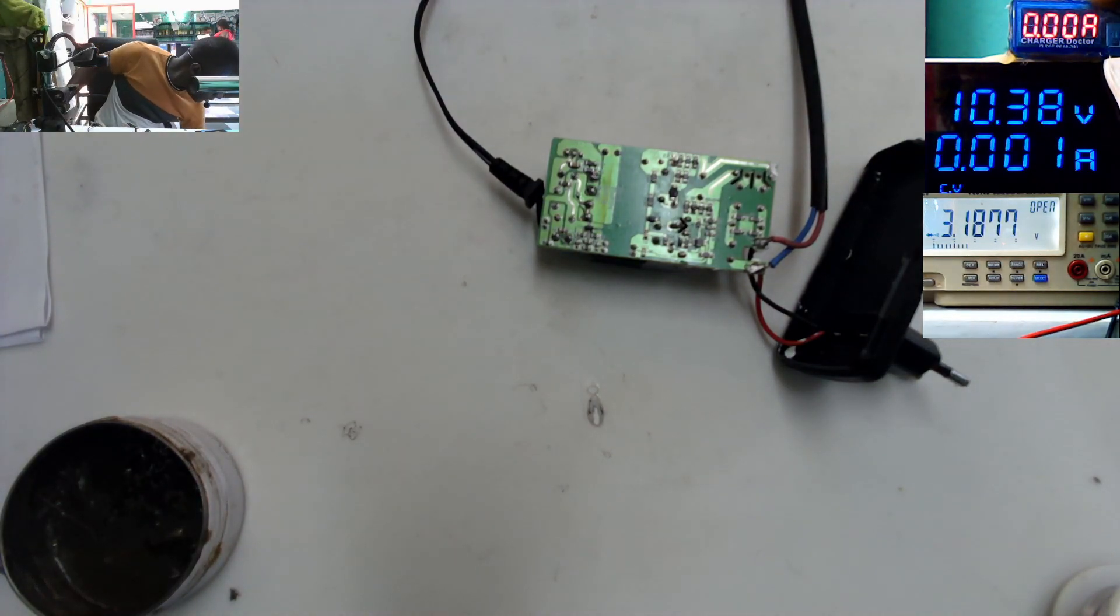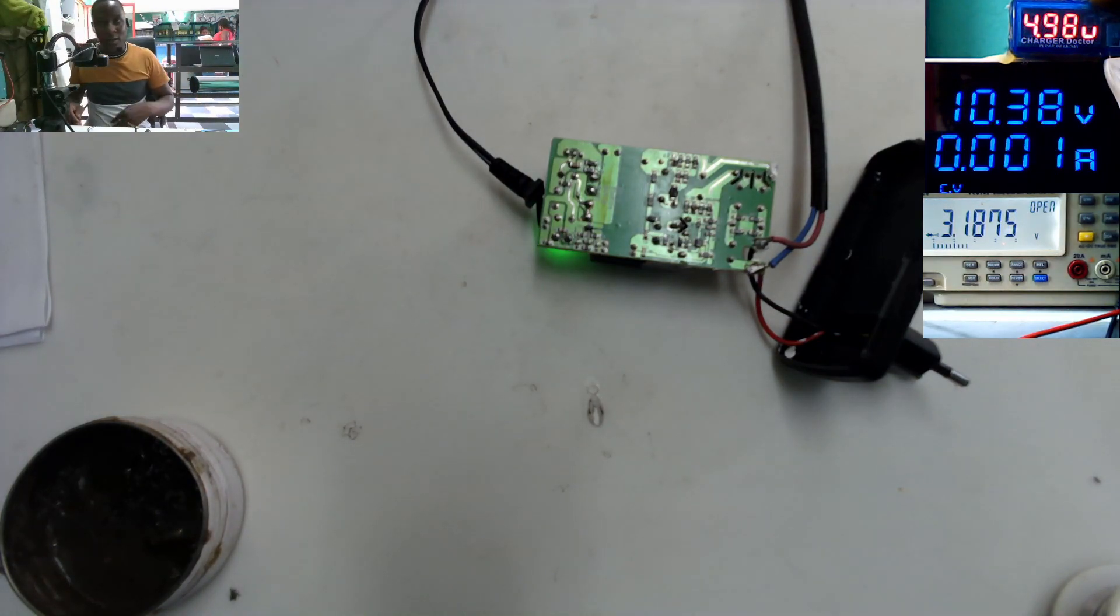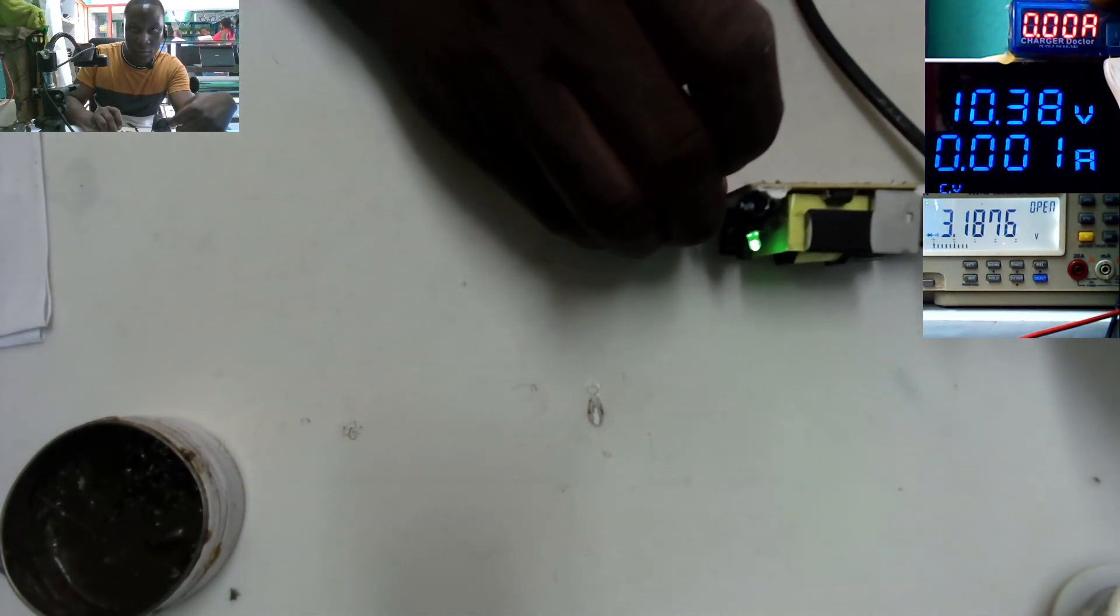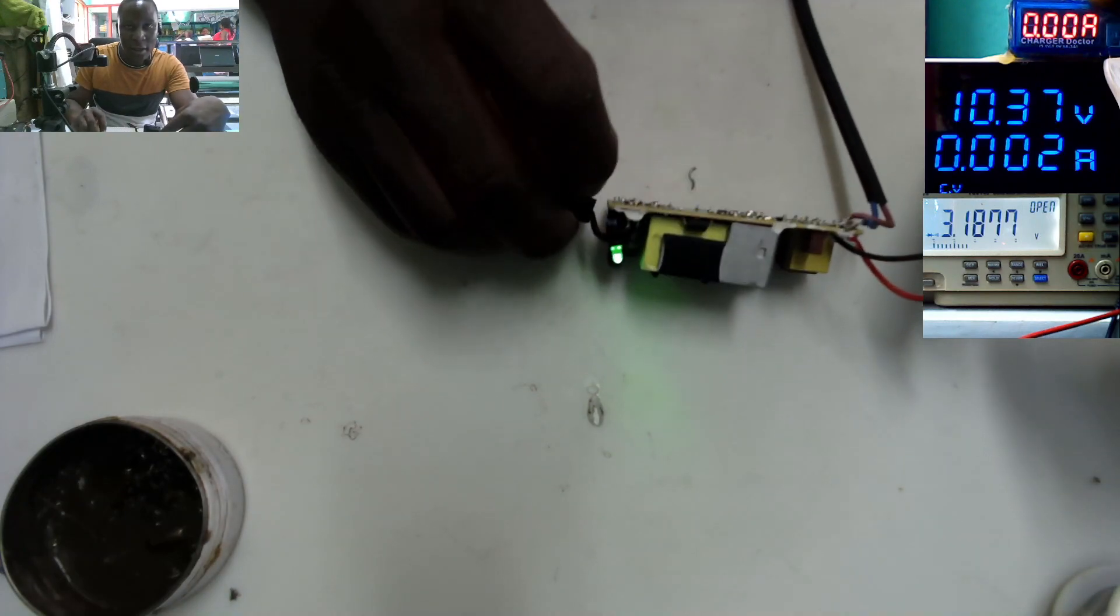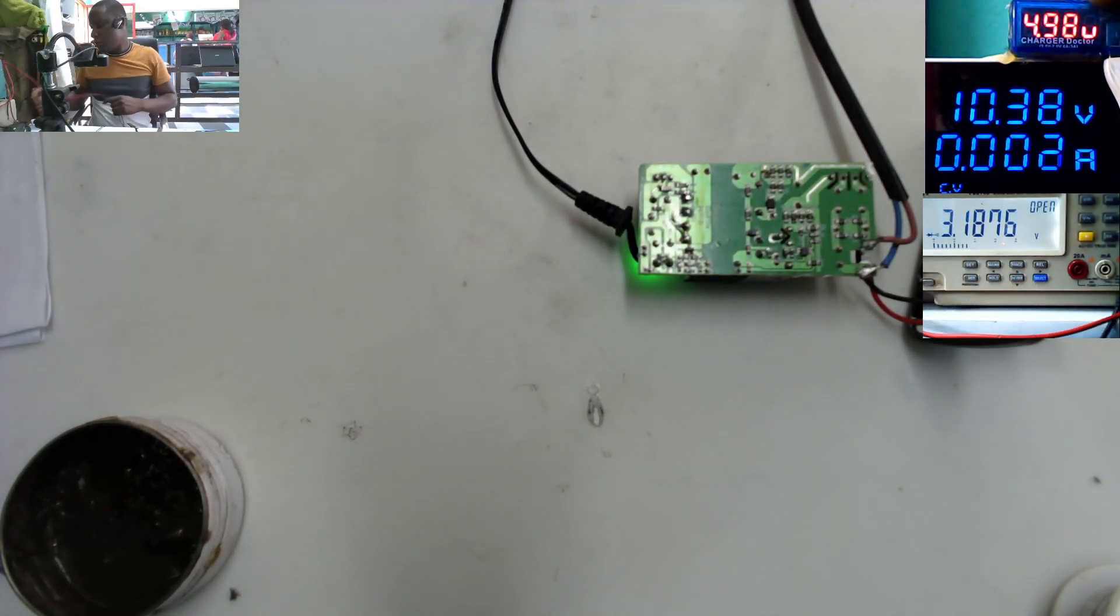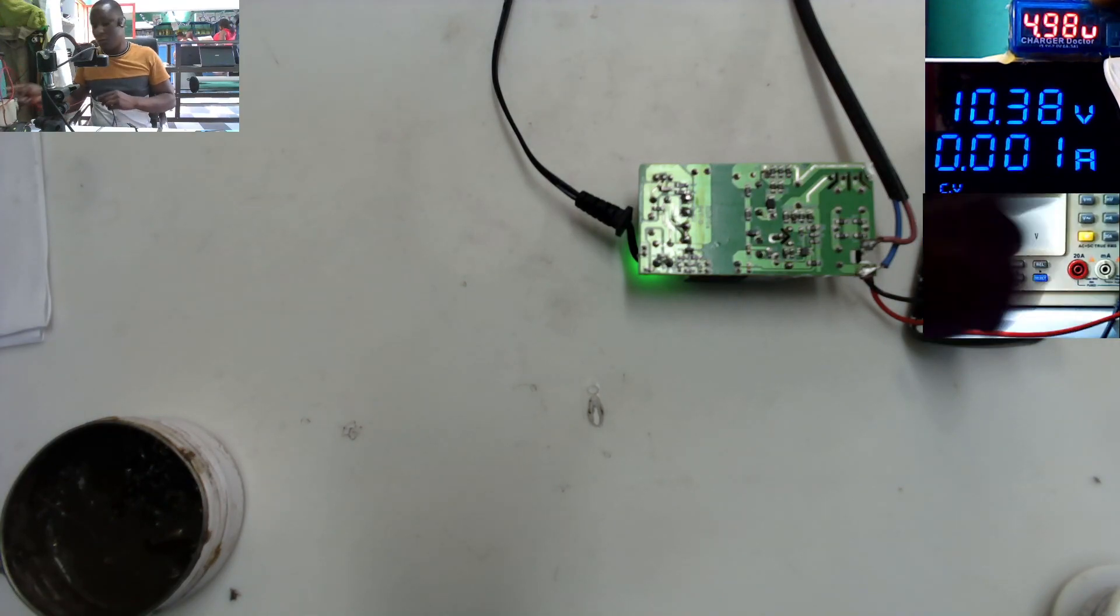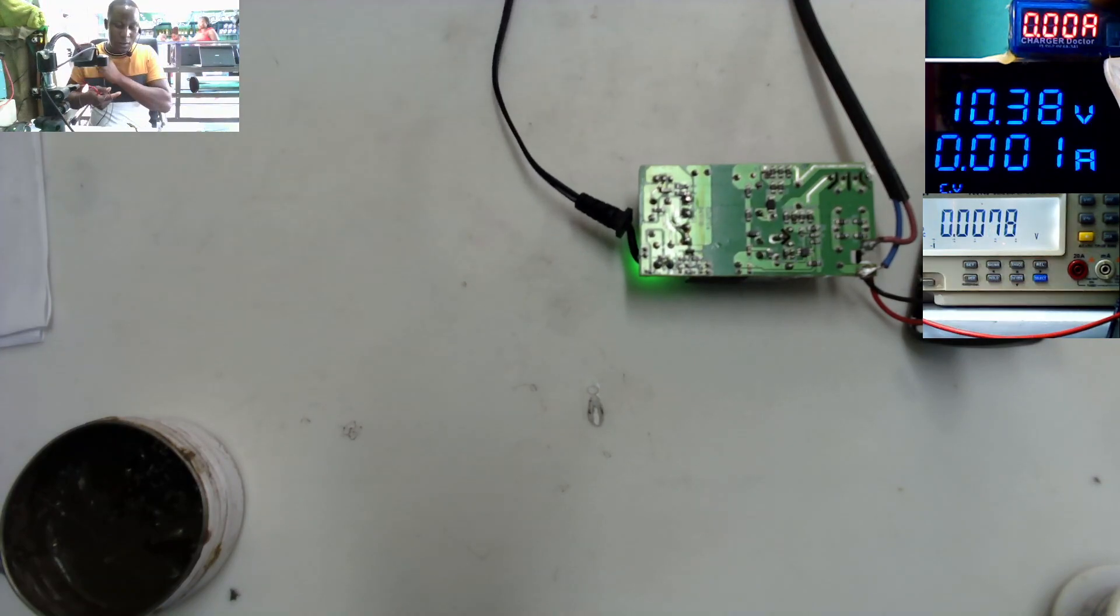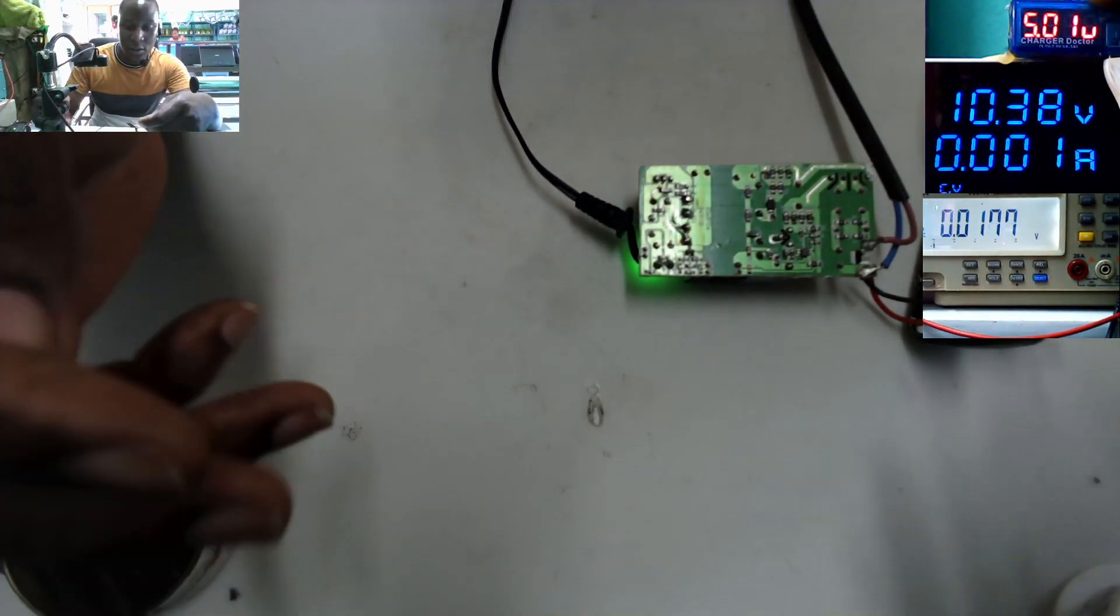We can plug in the charger. Charger is plugged. You see, check here with the green light. Let's check for output voltage. That's very important.